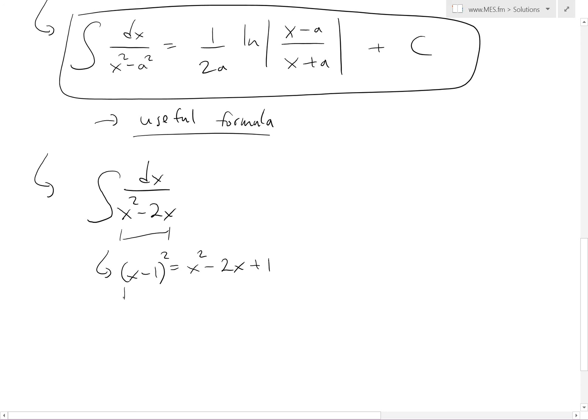So if we use this square here, we'll have the integral of dx over x minus 1 squared, and there's a plus 1, so we have to subtract by 1. So now this is our new a, and our x is going to be x minus 1.